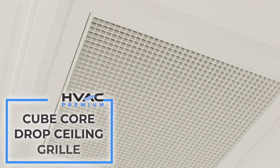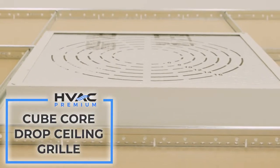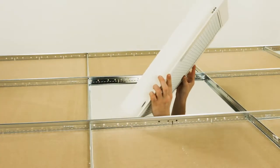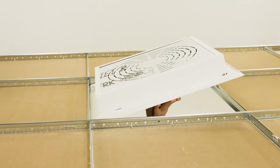The CubeCore Egg Crate Grill with Rear Insulation. Once you select the ceiling square for your grill, feed your grill through the square hole diagonally and lay it flat in the grid.